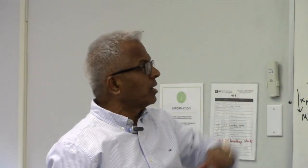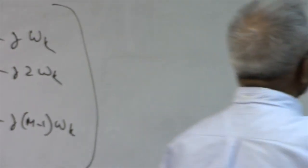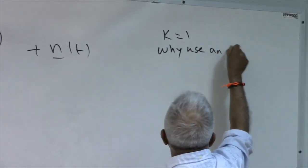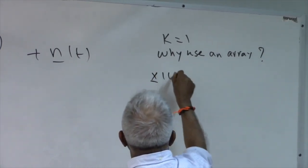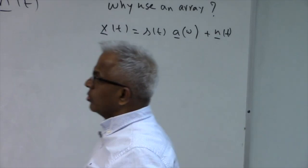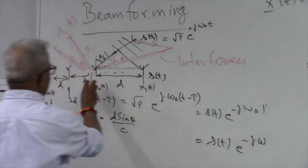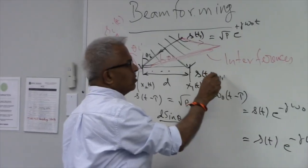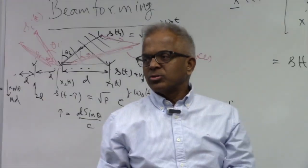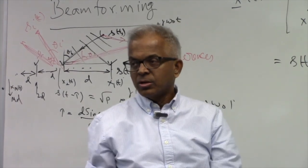To show the advantage of an array, let's take the single-source case. Why use an array? Here, X(T) equals S(T) · a(omega) plus N(T). If I want to coherently add the signal — each sensor has a signal component and noise component — if the sensors are far enough apart, you can assume the noise is uncorrelated.